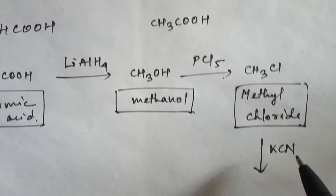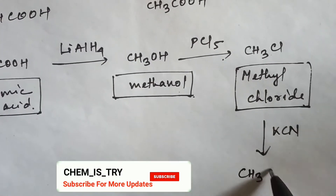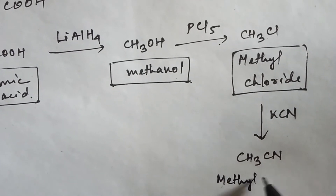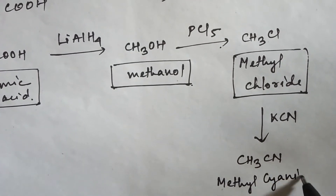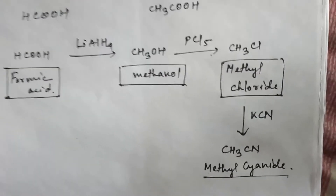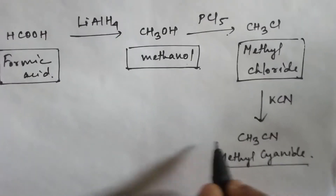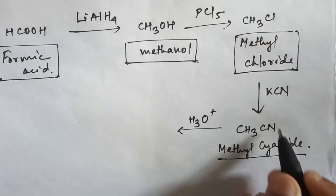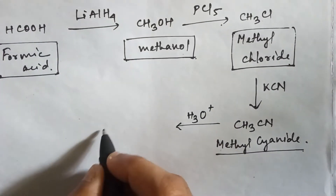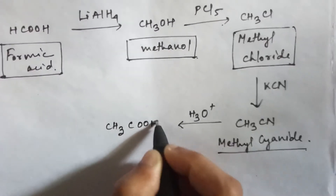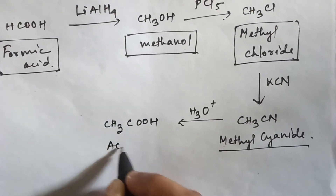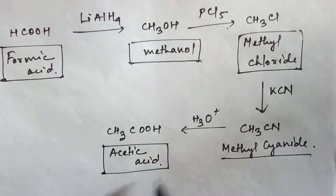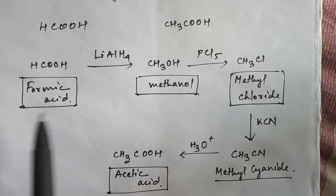Now in methyl chloride, if you add potassium cyanide, the chlorine will be replaced by a cyanide group and the product will be CH3CN, that is methyl cyanide. Then in methyl cyanide, if you add water (H2O), the cyanide group will convert into an acid group and you will get acetic acid — that is our desired product.